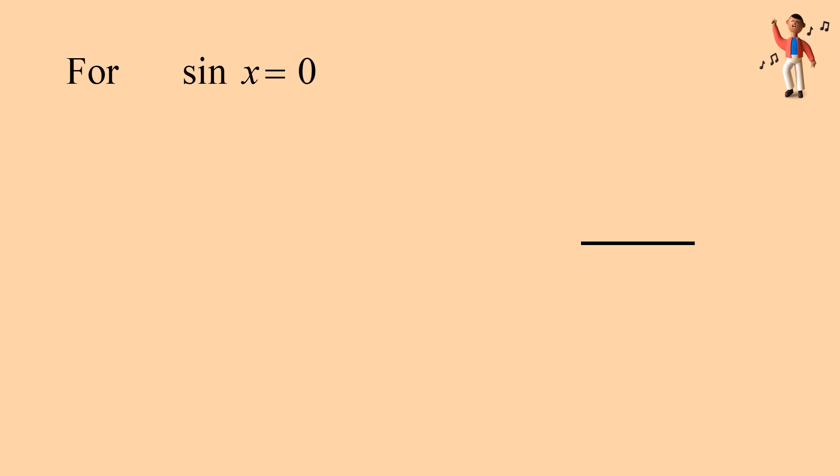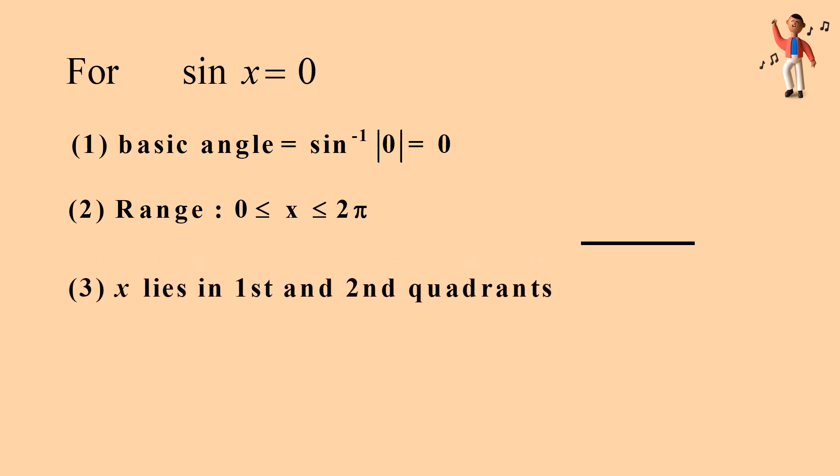For sin x = 0: Firstly, find the basic angle, sin⁻¹|0| = 0. Secondly, find the range. Thirdly, x lies in first and second quadrants.